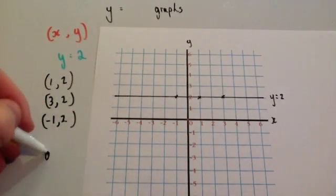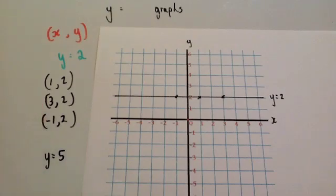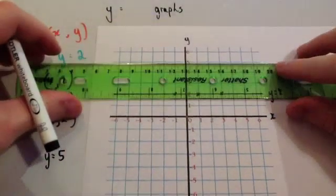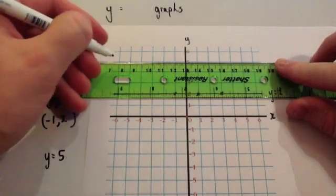So if you're asked to draw the graph, y equals 5, it would be a horizontal line that goes through 5 in the y-axis, like this.